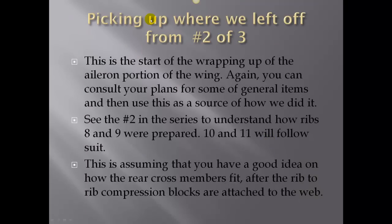Picking up where we left off from number two, this is the start of wrapping up the aileron portion of the wing. Again, you can consult your plans for the general items; this is a simple source of how we did it. See the number two in the series to understand how ribs eight and nine were prepared. Number ten and number eleven are exactly the same.